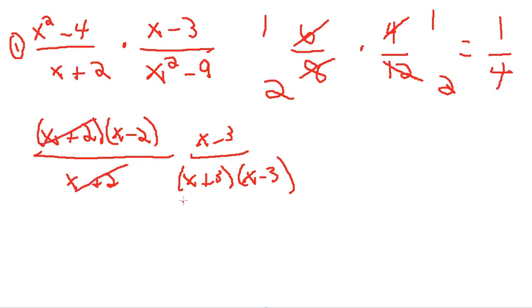This divides out. This divides out. You're left with x minus 2 over x plus 3. That's it. Like taking candy from a baby.